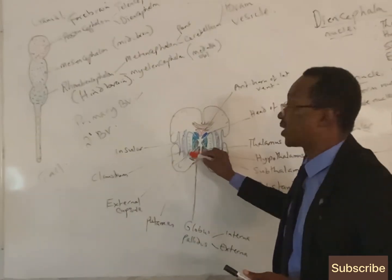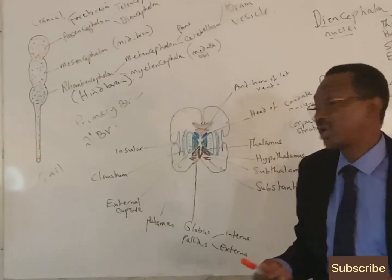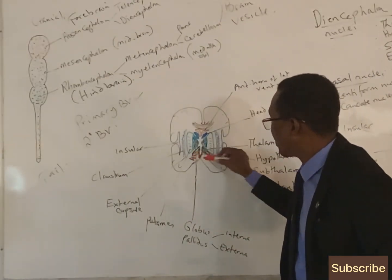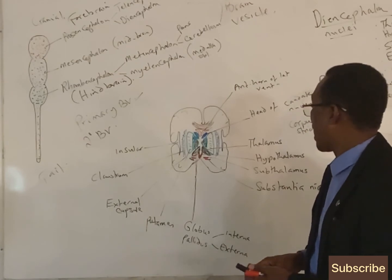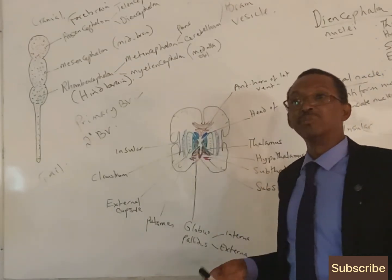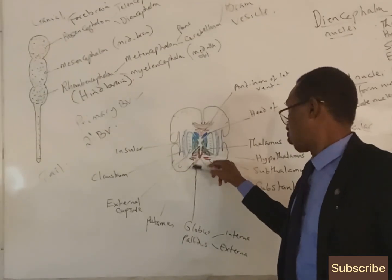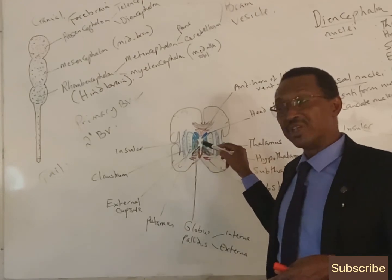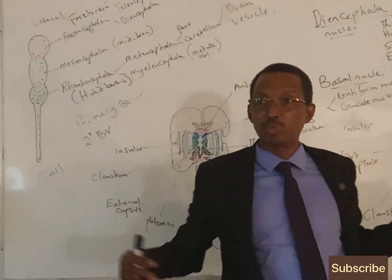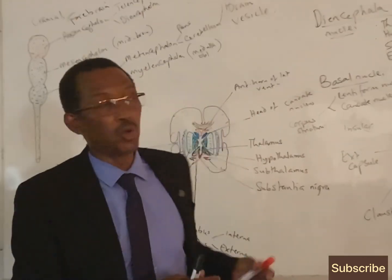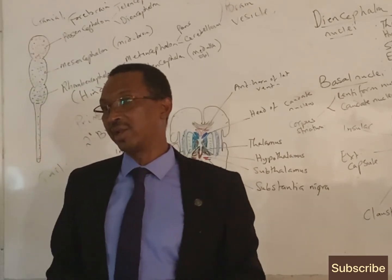The subthalamic nuclei lie under each thalamus, so we have subthalamic nuclei on either side. There is also a sheet of gray matter related to the midbrain called substantia nigra, which is part of the basal ganglia or basal nuclei to be discussed later. All these groups of nuclei are what we are going to discuss in our lectures on intracerebral nuclei.